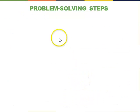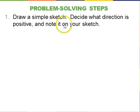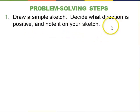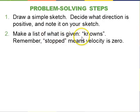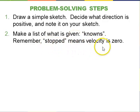Finally, let's talk about problem-solving steps. Step 1: draw a diagram — a simple sketch to get the concepts on paper and decide which direction is positive. Step 2: make a list of what is given — your knowns. Sometimes numbers are stated directly; sometimes words like 'stopped' mean velocity is zero, or 'comes to rest' means v-final is zero. Step 3: identify exactly what the question is asking for — your unknowns.